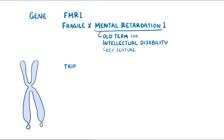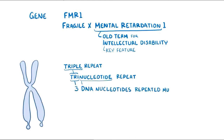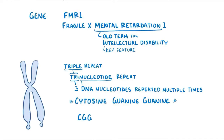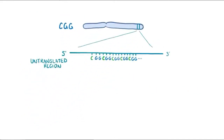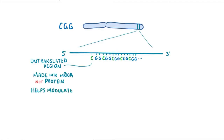The FMR1 gene has a triplet repeat, or trinucleotide repeat, which means that a group of three DNA nucleotides is repeated multiple times in a row. In FMR1, it's the nucleotides cytosine, guanine, and guanine, or CGG. These CGGs are found in the 5' untranslated region of FMR1. A 5' untranslated region is the part of the DNA at the beginning of the gene that's made into mRNA but not protein, and helps modulate gene expression.